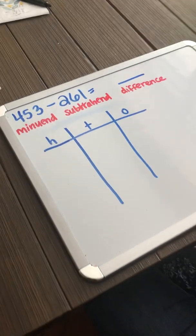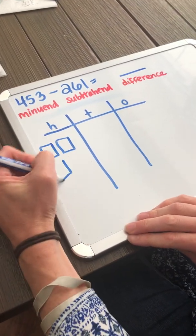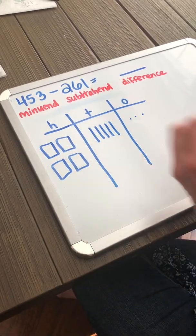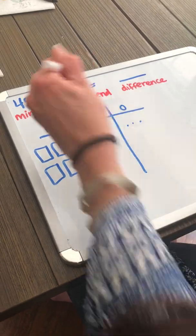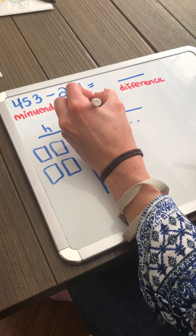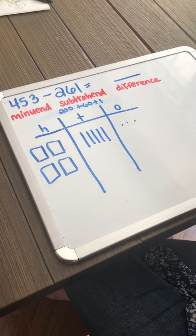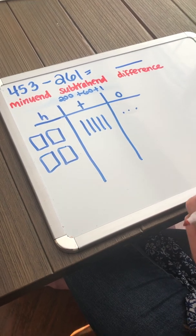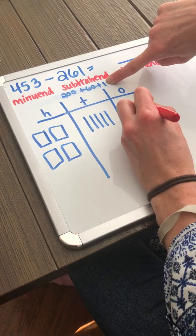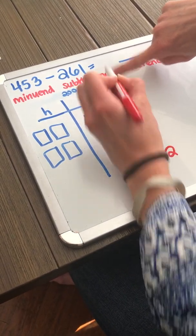Let's look at that with drawings. Again, I represent my minuend, which is 453, and I'm taking away my subtrahend. My subtrahend is 261. I like to break that apart to help me remember what I need to subtract. So I need to start with my ones. I have three ones and I need to take away one one. I can take away one one and I am left with two ones. No problem.